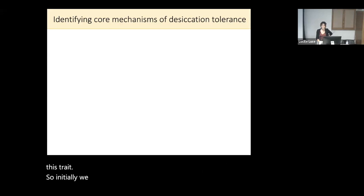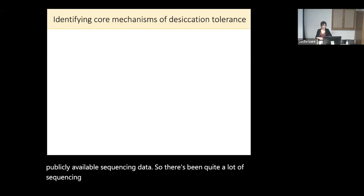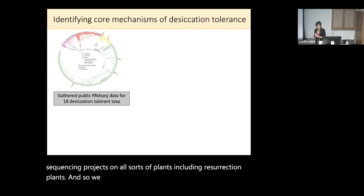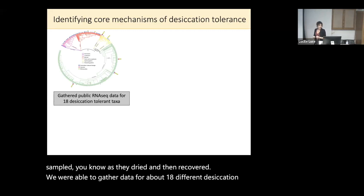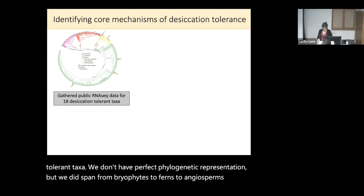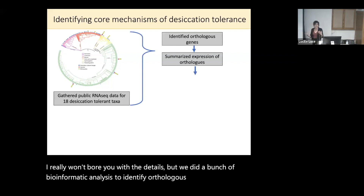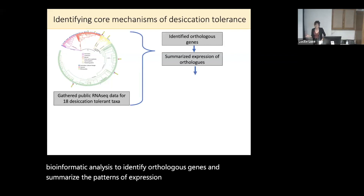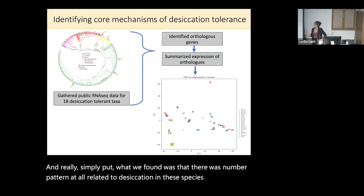We wanted to take advantage of this system to identify some of the core or shared mechanisms of this trait. Initially, we thought we could do this by taking advantage of publicly available sequencing data. There's been quite a lot of sequencing projects on resurrection plants, and we combed through NCBI to find all of the RNA-seq datasets of resurrection plants sampled as they dried and then recovered. We were able to gather data for about 18 different desiccation-tolerant taxa, spanning from bryophytes to ferns to angiosperms.